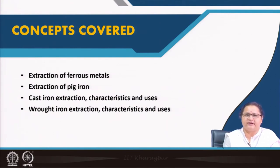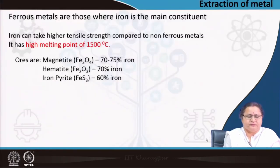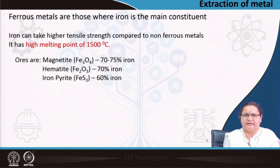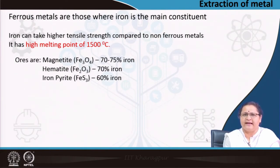First, coming to how we extract ferrous metals — we will be very brief. Then we will go to the extraction of pig iron and then cast iron and wrought iron with their characteristics and uses. Ferrous metals are those which contain iron, and iron can take higher tensile strength compared to non-ferrous metals; that is why we use iron extensively in our buildings, although it has many other drawbacks.